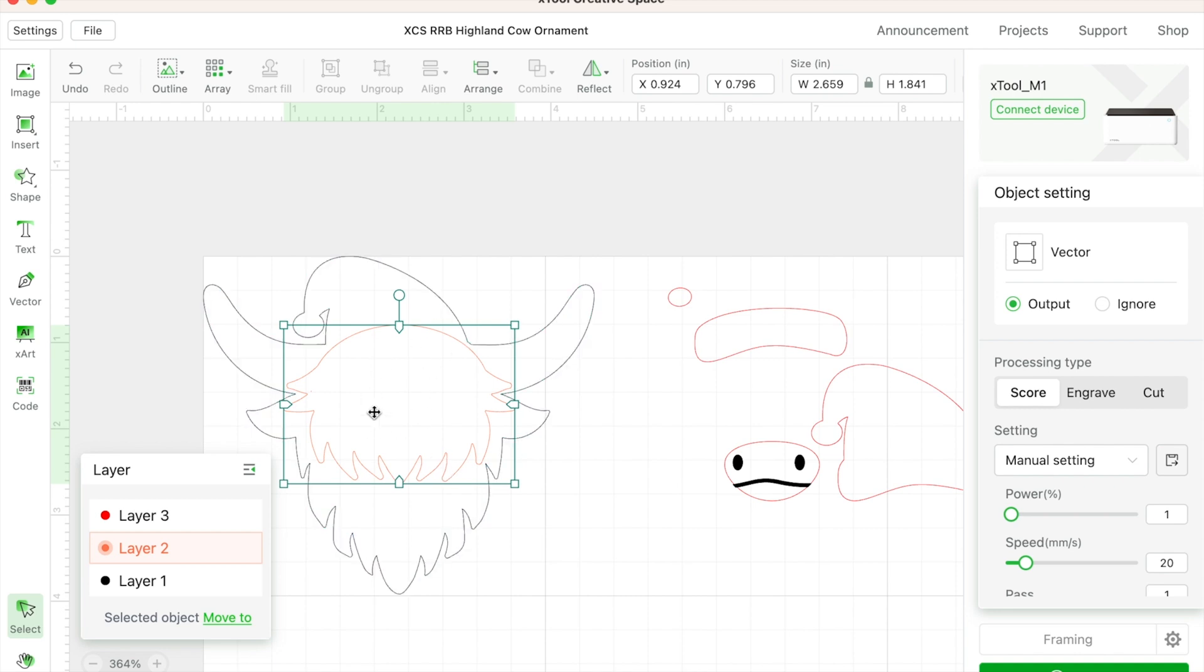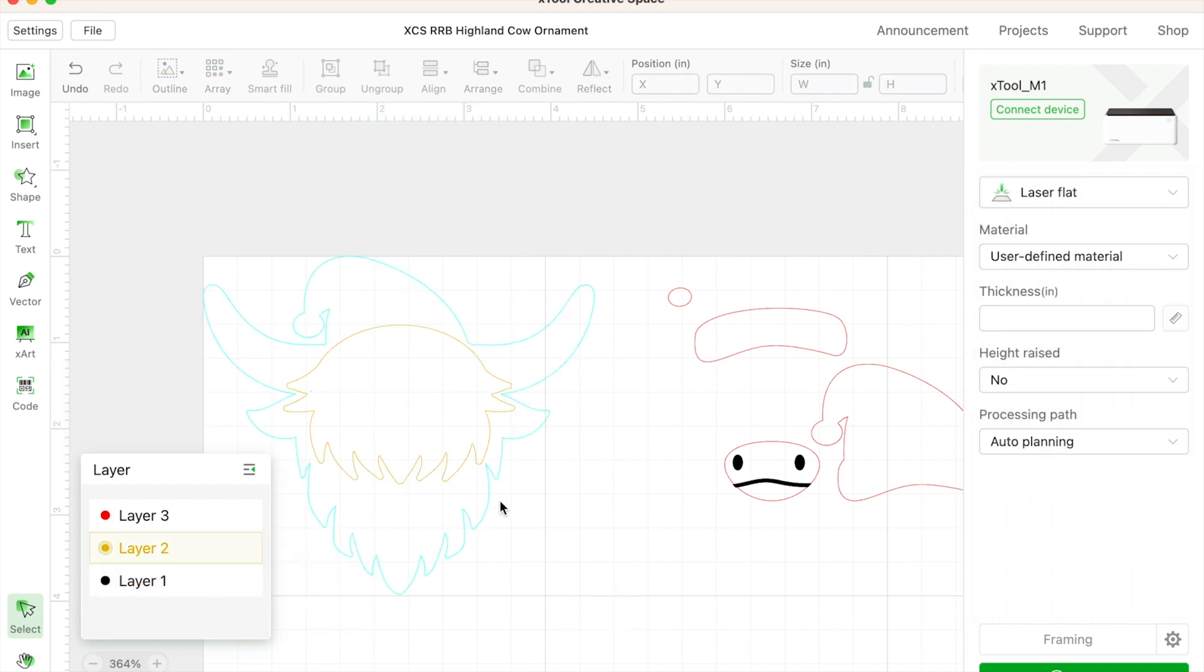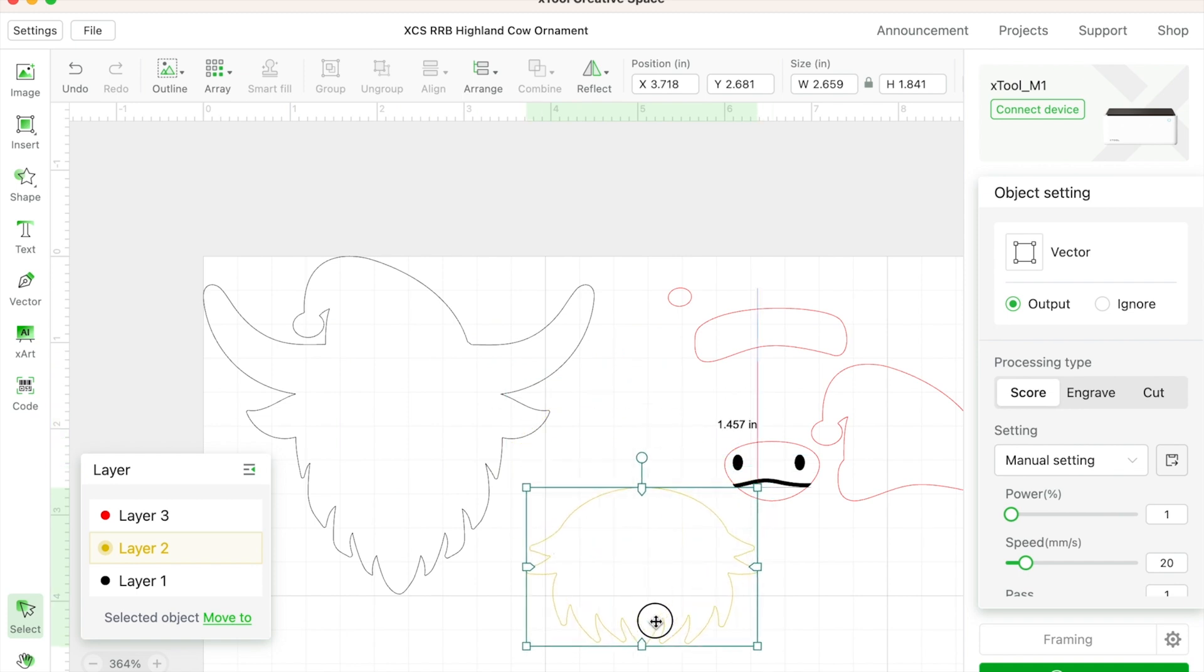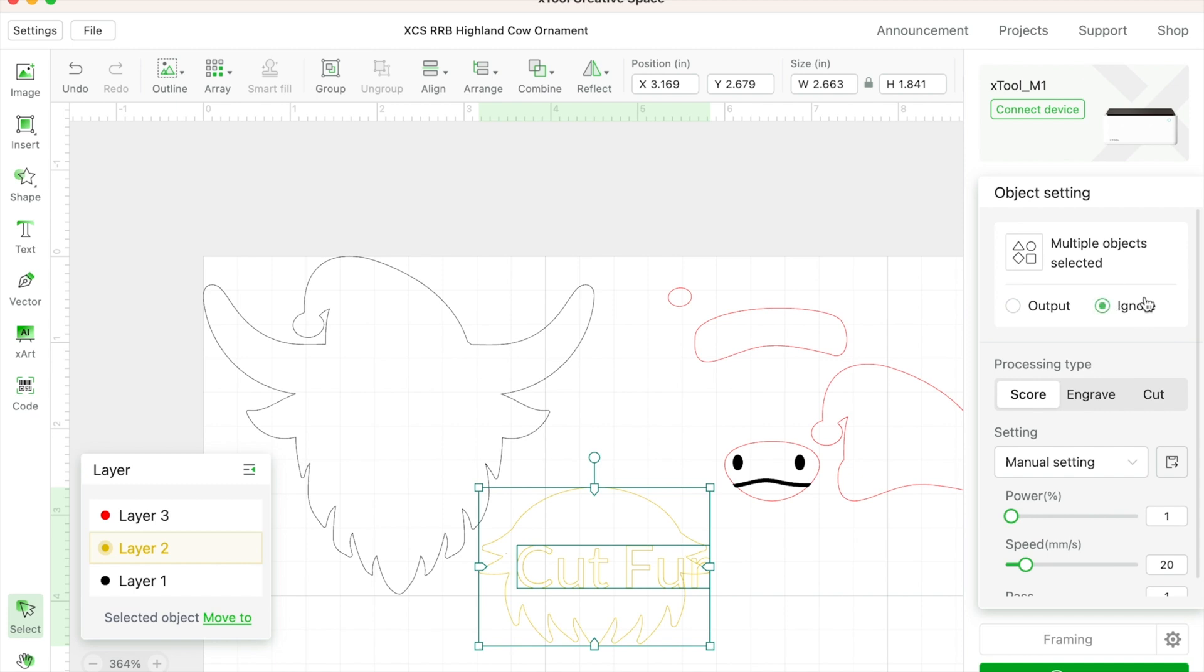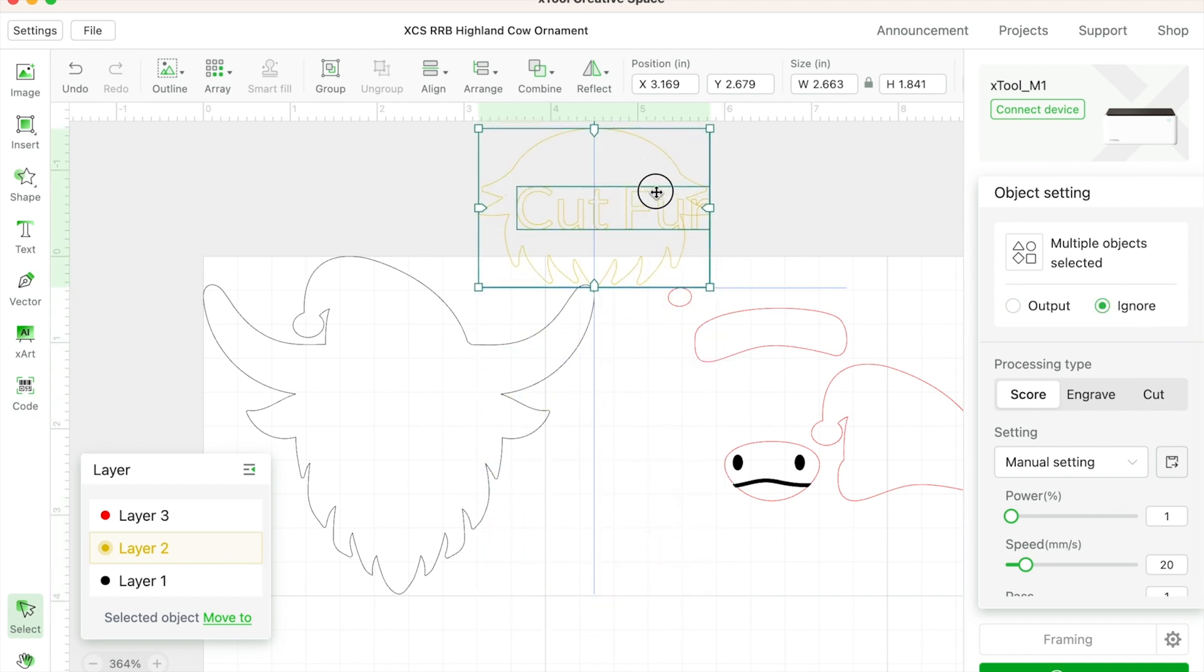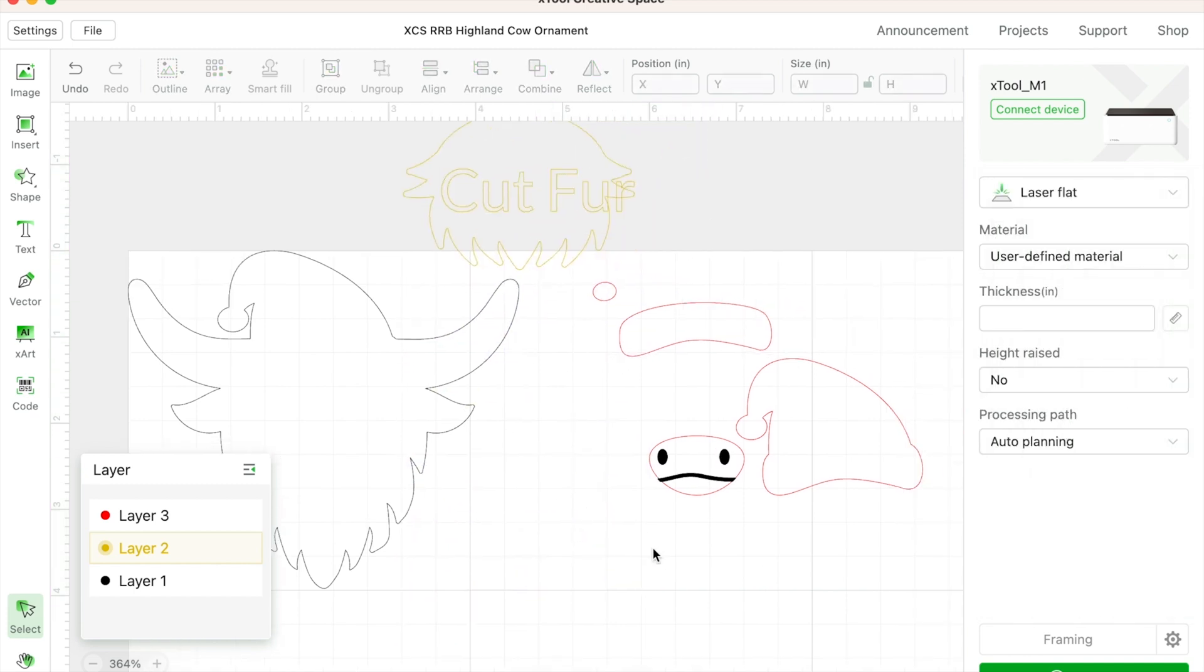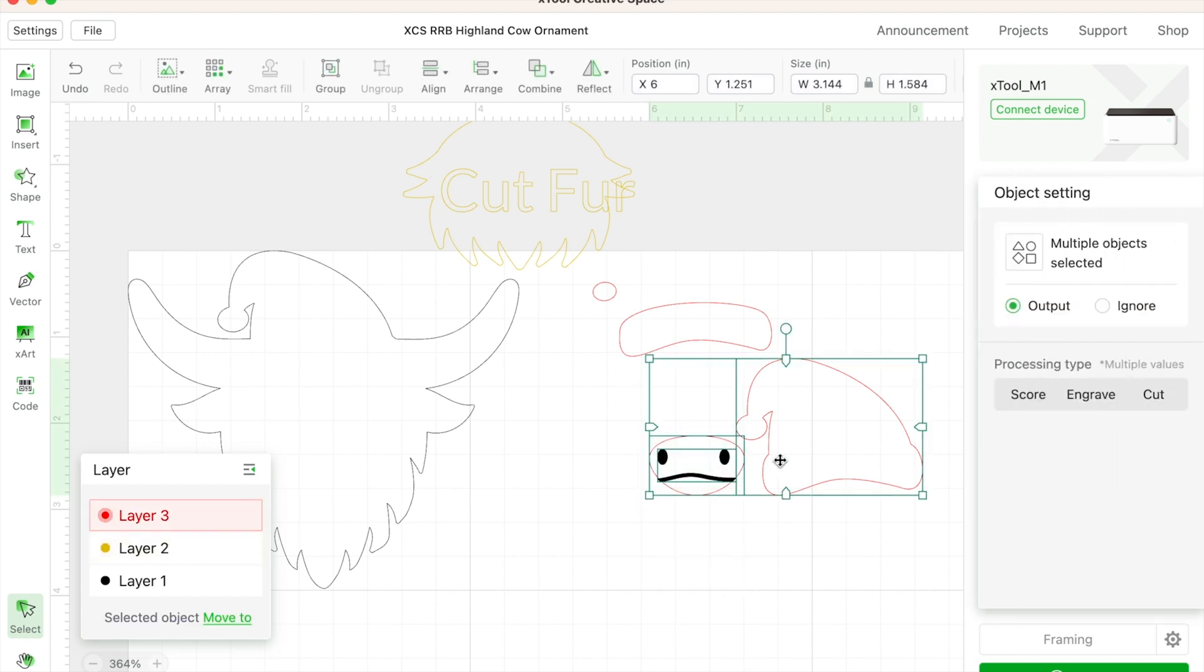This is optional. I'm going to use faux fur for this piece because I have a billion pounds of the stuff. So if you don't have it, you can cut this. I'm going to set it to yellow because mine is actually going to be set to ignore. And what that means inside of XCS is that it will not be processed by the laser at all, neither will this text because I'm going to set them both to ignore. If you would like to cut it, just set it to cut and it'll be fine.